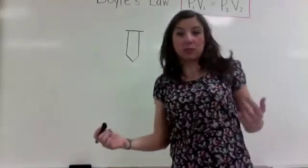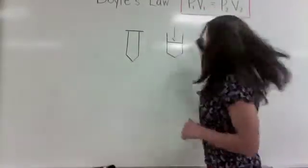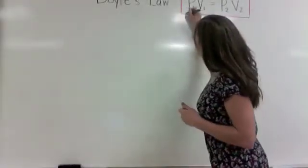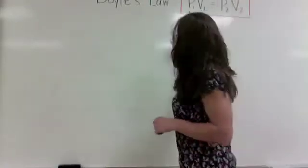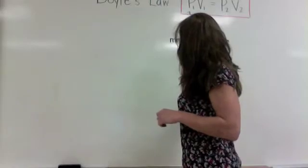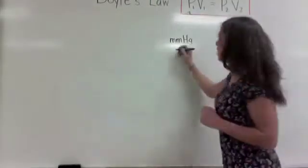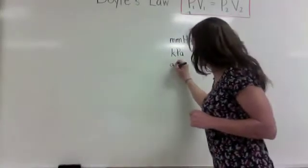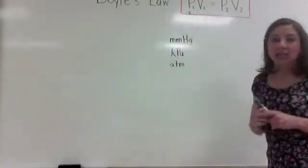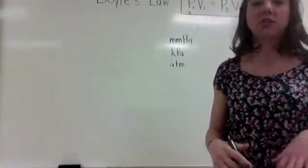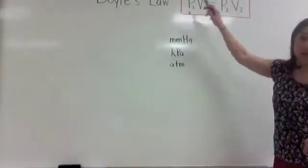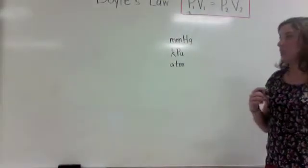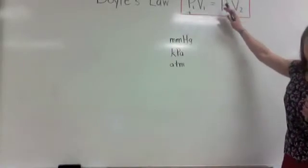That's basically what Boyle's Law is. Now, pressure can be discussed in several different units. Pressure can be found in millimeters of mercury, kilopascals, or atmospheres. It doesn't matter which type of pressure you use, just as long as you use the same units for both sides — pressure one and pressure two must both be in the same unit. You can't have millimeters of mercury on one side and kilopascals on the other.